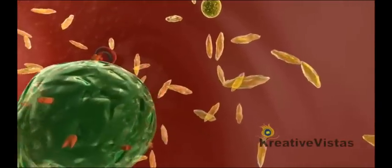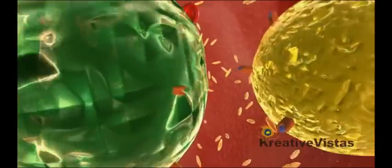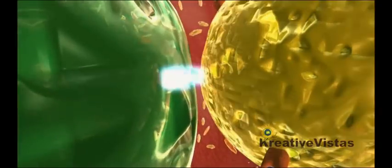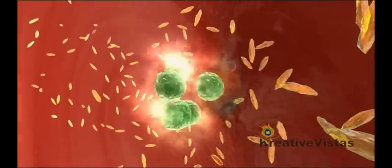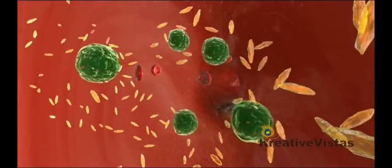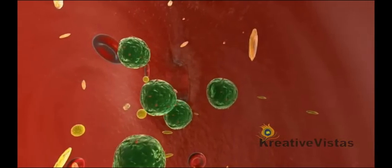T cells present the antigen peptide to antigen receptors of B cells. The B cells get activated. On activation, B cells divide many times making two types of clones: memory B cells and plasma cells.